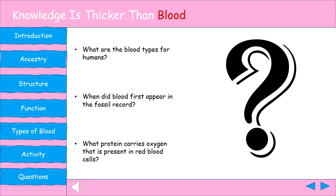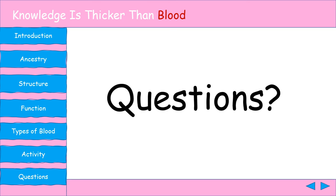Now we're going to test your knowledge. First question: what are the blood types for humans? That's correct. Next question: when did blood first appear in the fossil record? Yes, that is correct — 500 million years ago. Last question: what protein carries oxygen that is present in red blood cells? Yes, it is hemoglobin — absolutely correct. That concludes our presentation. Thank you.